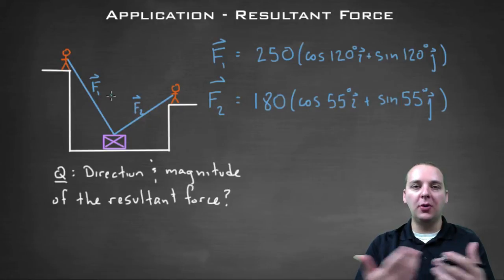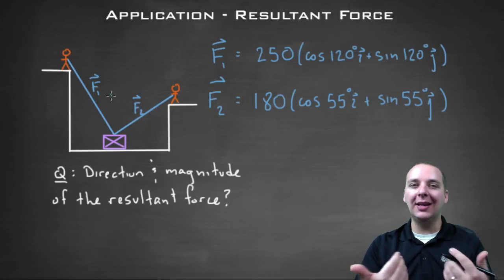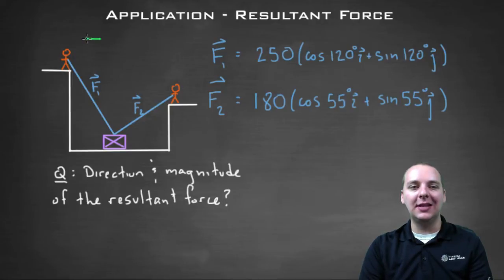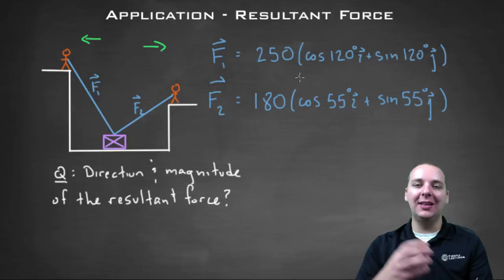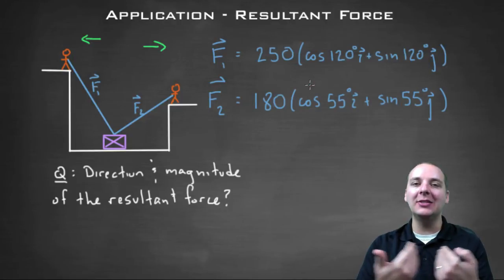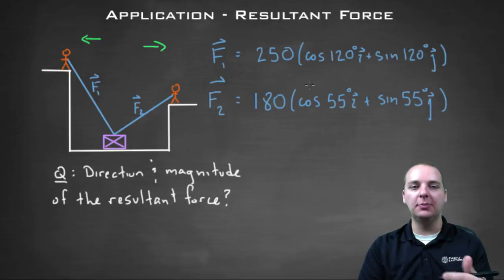Notice that the horizontal component, the I component, they're kind of working against each other because this guy is pulling left and this guy is pulling right. So I would expect in the resultant force these I components to kind of cancel each other out in some sense, maybe not totally but at least a little bit.